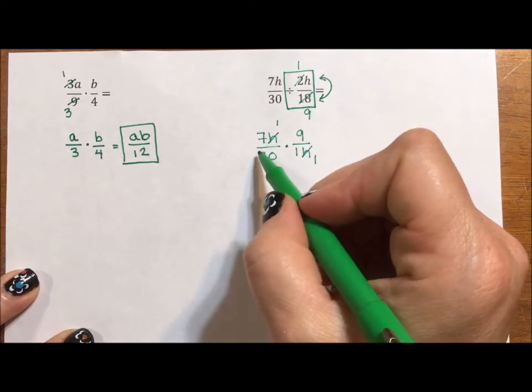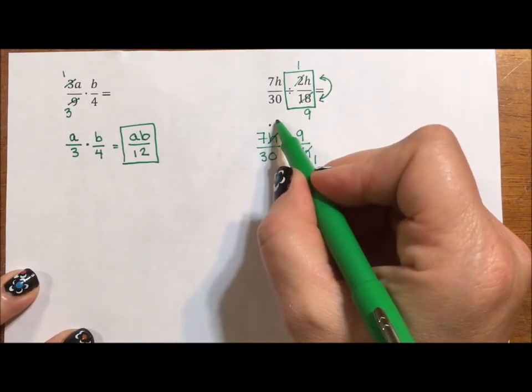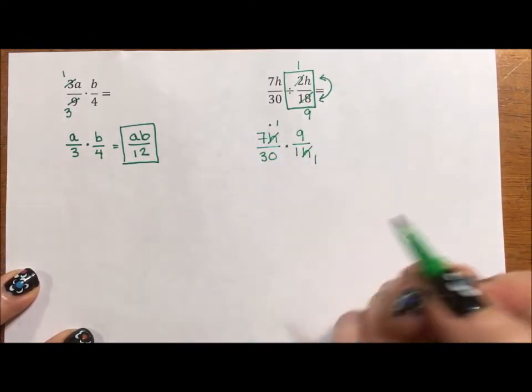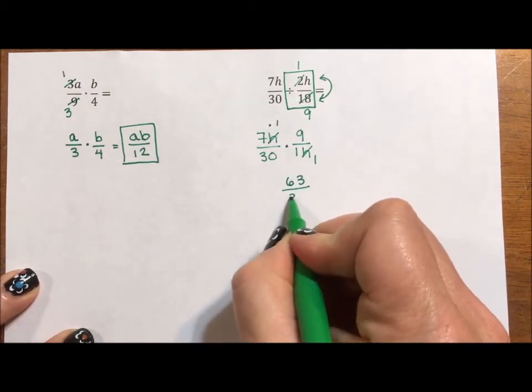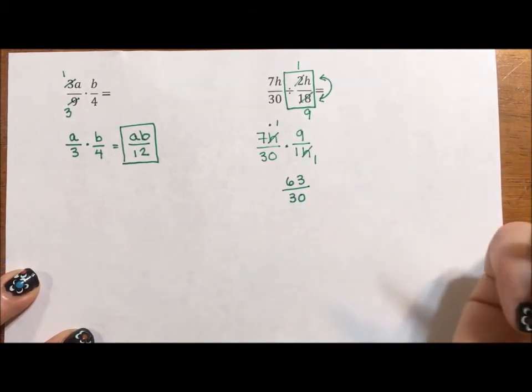And now we have in the numerator, 7 times 1 times 9. That's 63. 30 times 1, which is 30. But it's not reduced.